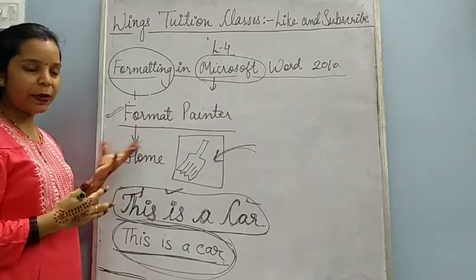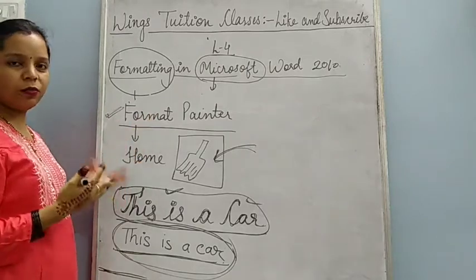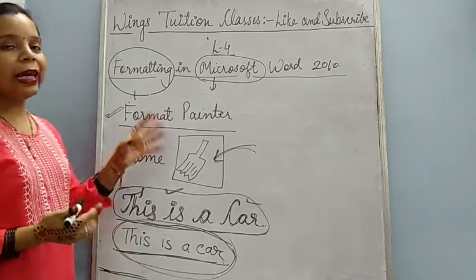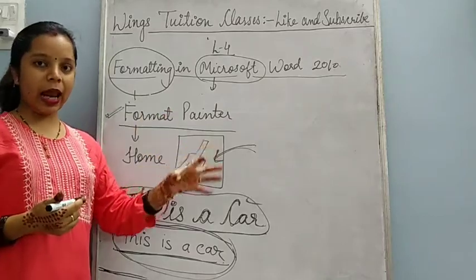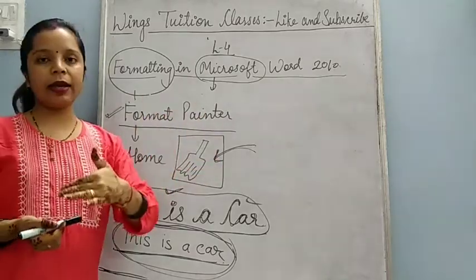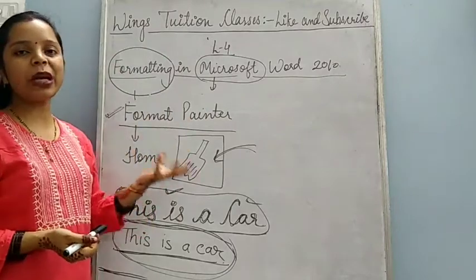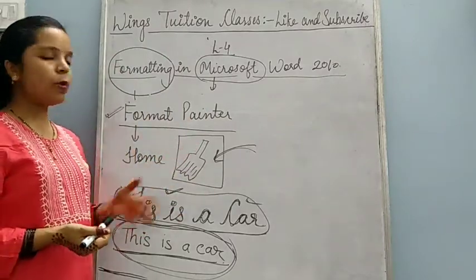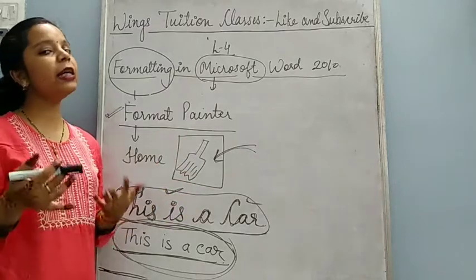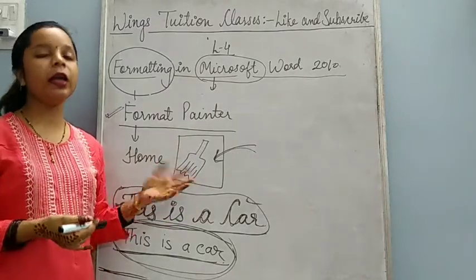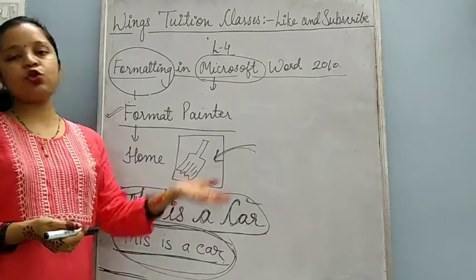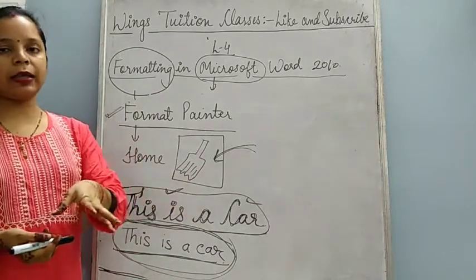So this was about Format Painter. What is the work of Format Painter? It is very simple — it copies the style and effect of one text into another text. Format Painter is simply an option or button in MS Word using which we can copy the style of one text to another text.